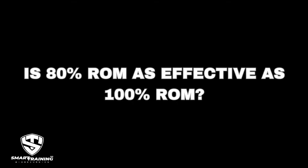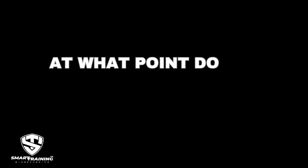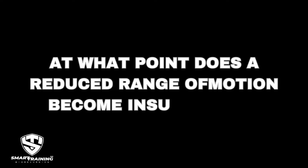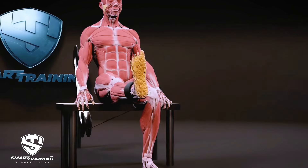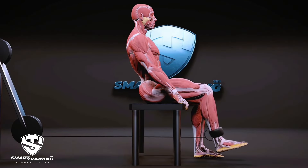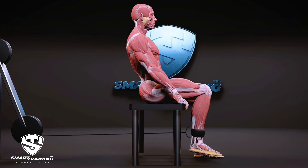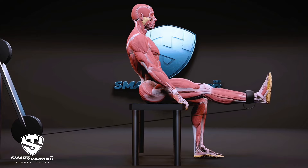Up to this point, the discussion has been comparing dynamic movements with zero movement in isometric exercises. The next question is: how much movement is ideal or sufficient?